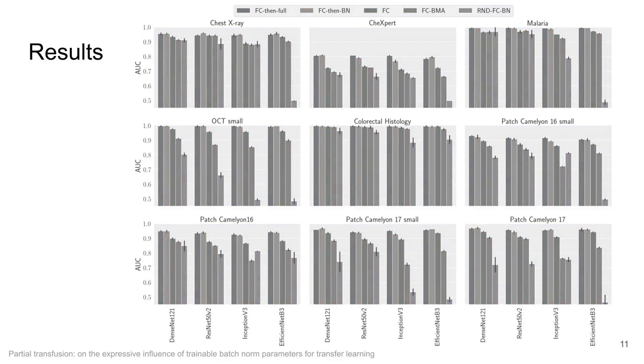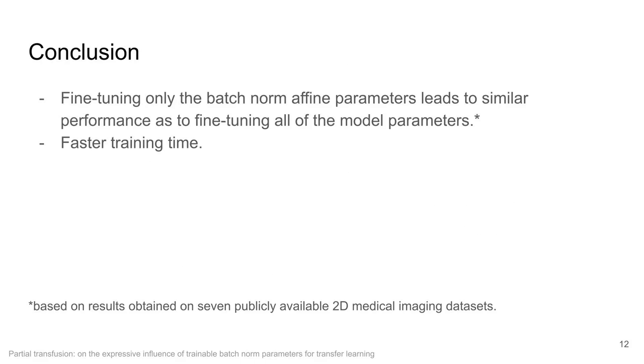Overall we observed that fine-tuning always led to better performance compared to only using the model as a feature extractor, which was expected, and we also observed for the majority of experiments that fine-tuning only the batch norm affine parameters led to similar performance as to fine-tuning the full model parameters. And that is the main conclusion of our paper.